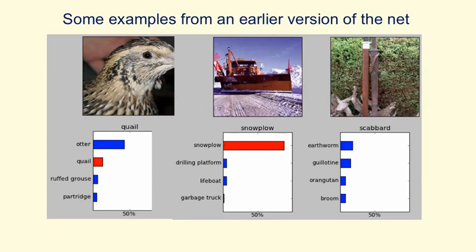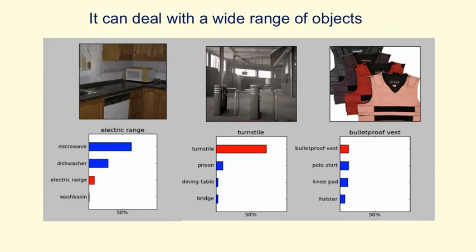On the left it gets it wrong, possibly because the beak of the bird is missing and the feathers look very like the wet fur of an otter. But it gets it in its top five and does better than me — I wouldn't know if that was a quail, a ruffed grouse, or a partridge. On the right it gets it completely wrong — it says guillotine, and you can see why. It possibly says orang-utan because of the jungle-looking background and something orange in the middle, but it fails to get the right answer.